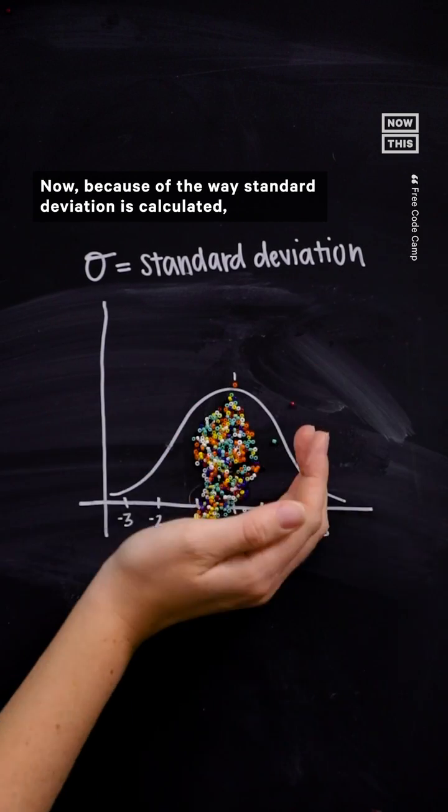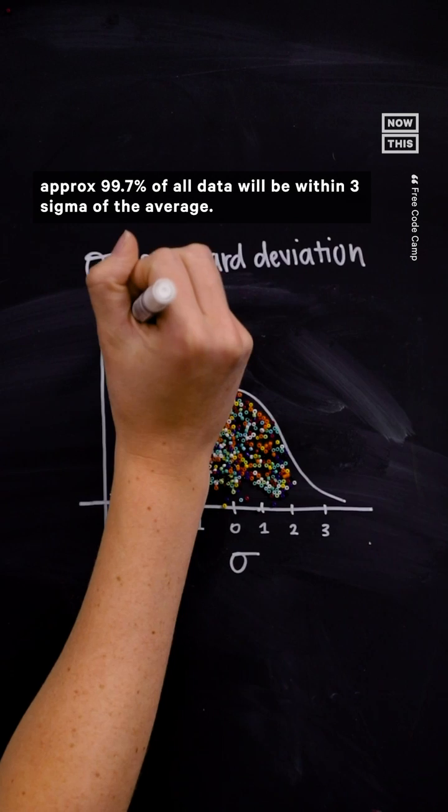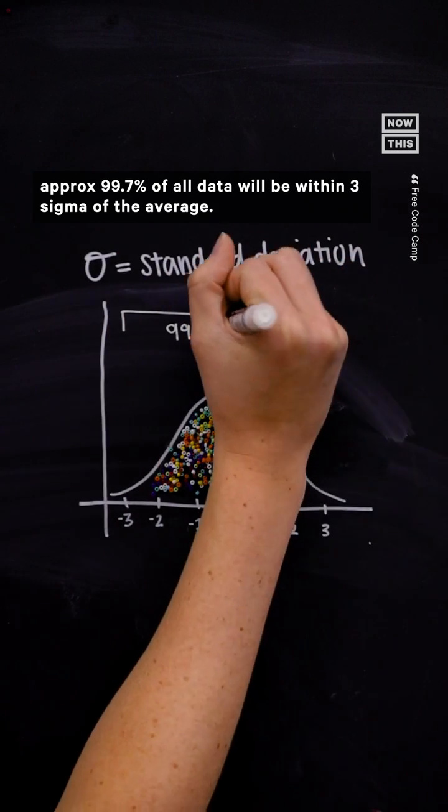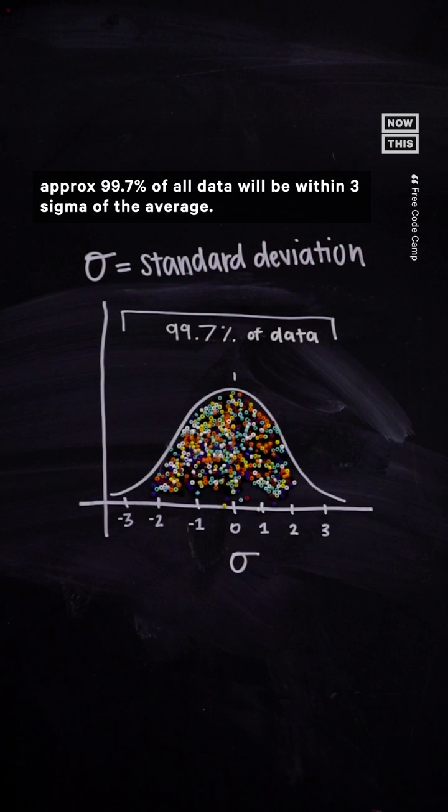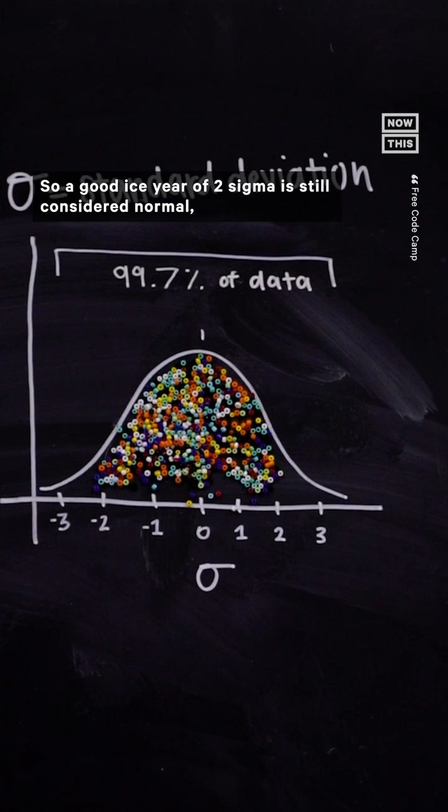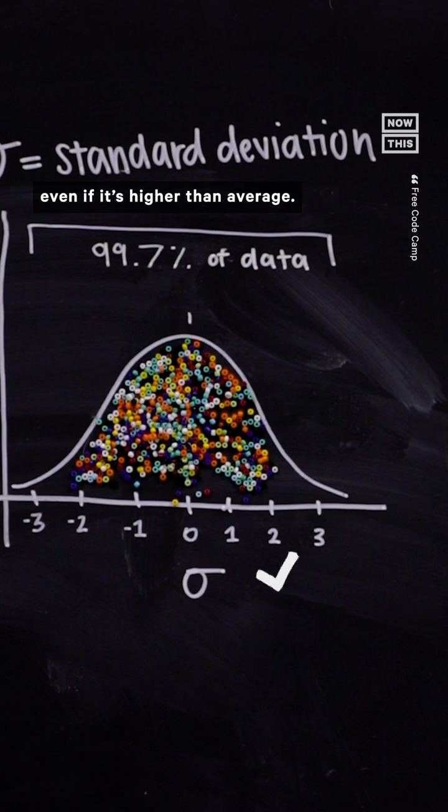Now, because of the way standard deviation is calculated, approximately 99.7% of all data will be within three sigma of the average. So, a good ice year of two sigma is still considered normal, even if it's higher than average.